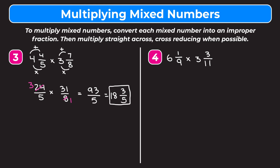Let's take a look at our last example: 6 and 1 ninth times 3 and 3 elevenths. Same thing — we start by changing each mixed number into an improper fraction. For the first one we do 9 times 6 which is 54, add 1 to get 55 as our new numerator, and keep our denominator as it is. For 3 and 3 elevenths: 3 times 11 is 33, plus 3 is 36, so we get 36 elevenths. Now we can cross reduce the 55 and the 11 and the 36 and the 9. 55 and 11 are both divisible by 11: 55 divided by 11 is 5, and 11 divided by 11 is 1. 9 and 36 are both divisible by 9: 9 divided by 9 is 1, and 36 divided by 9 is 4.